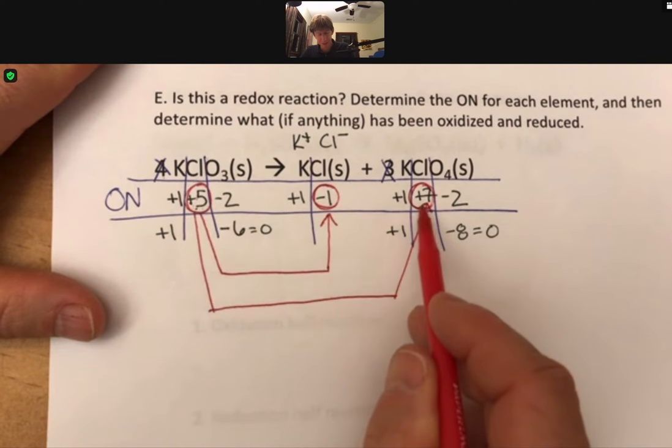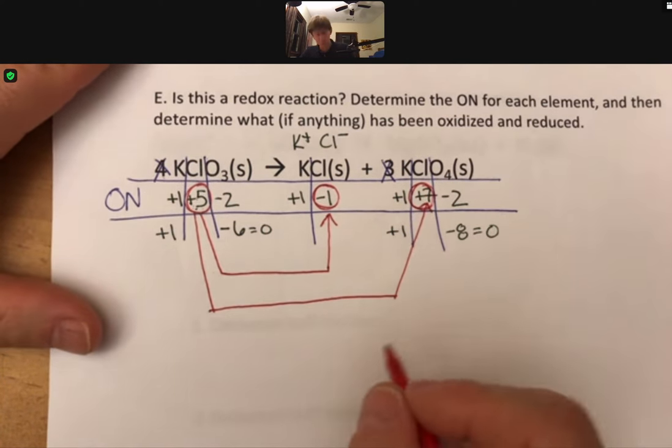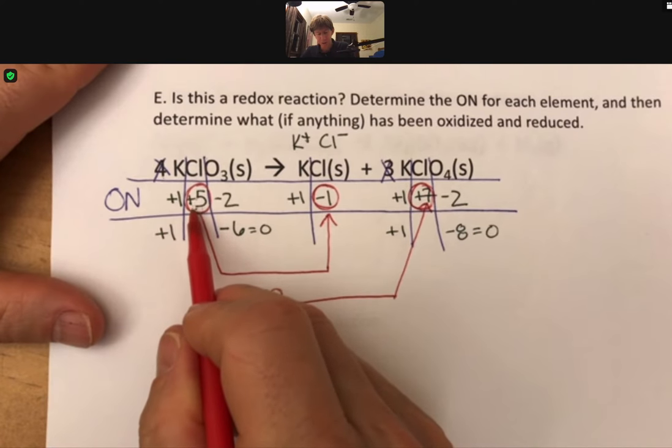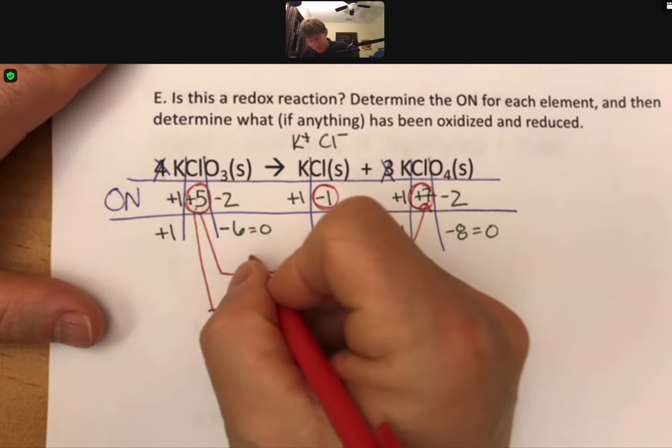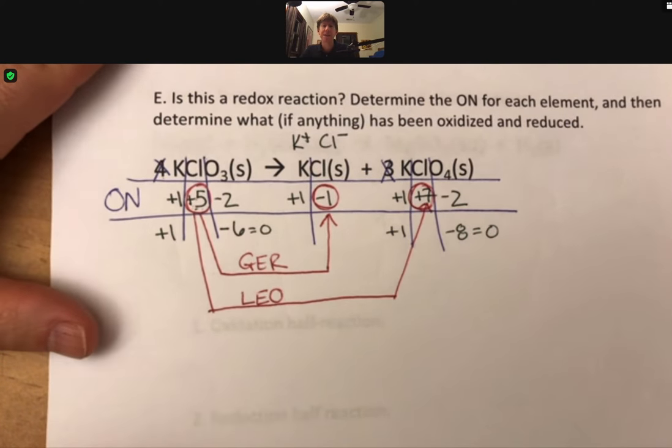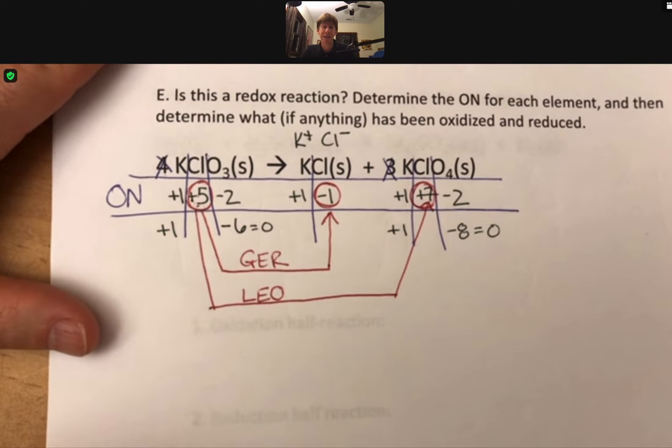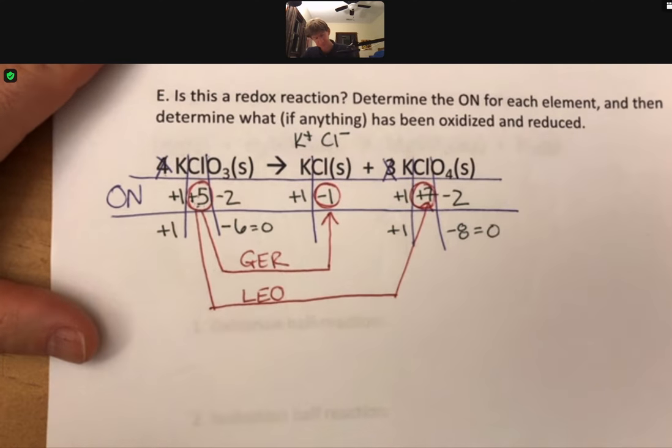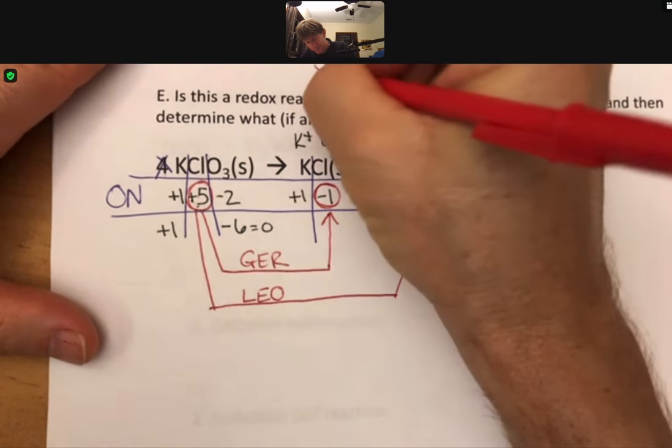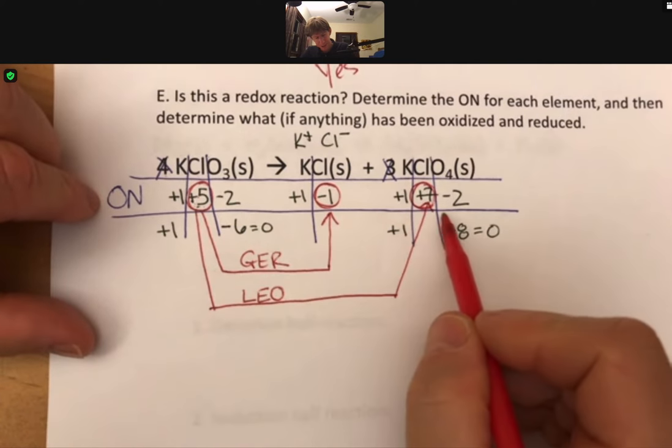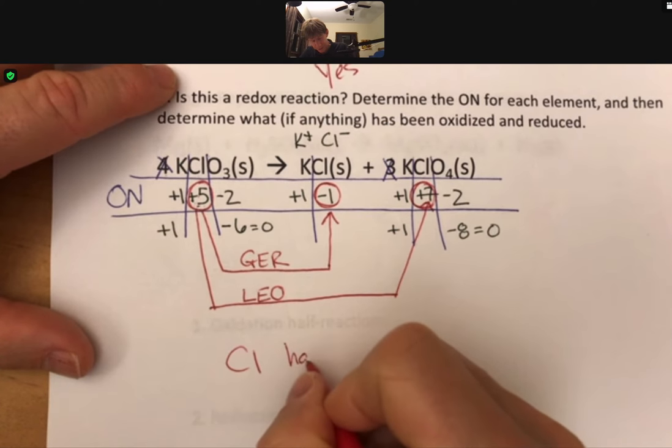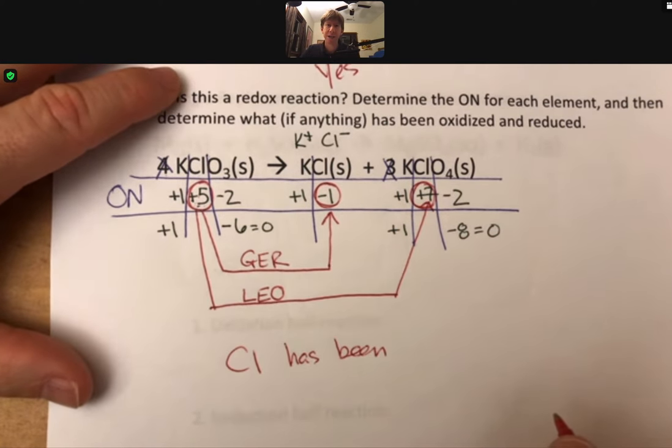What's interesting is that the chlorine has been both oxidized and reduced. I always start with my oxidation. Plus five to plus seven is more positive, that means these chlorines were oxidized. That means the other ones were reduced, plus five to minus one, that's more negative, they gained electrons. Let's reflect on the question. Is this a redox reaction? Yes. Determine the oxidation number for each element. Done. And determine what has been oxidized and reduced. Chlorine has been both oxidized and reduced.